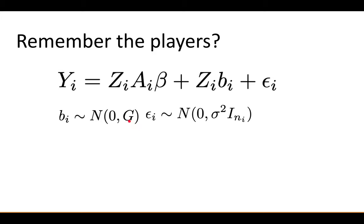And just a quick reminder, what does G tell us? I'll let you think about it for a second. G describes the between-subject variability. Okay, so those are the players.